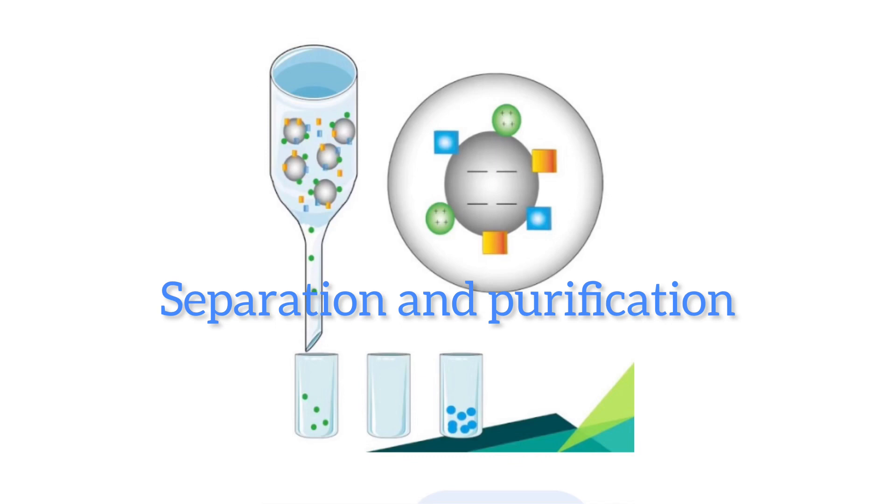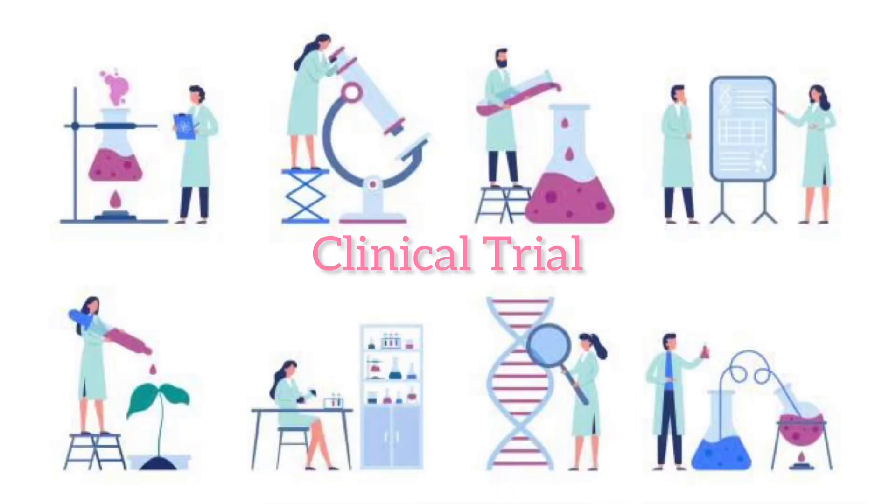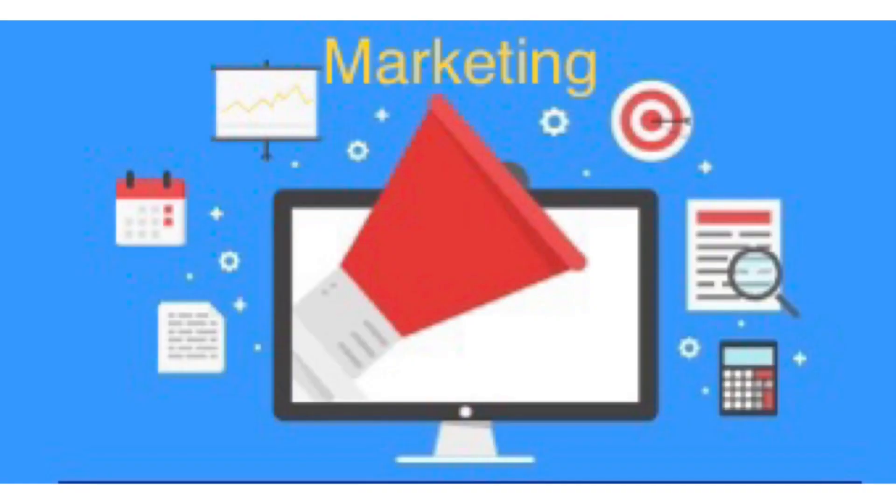After the formation of the product, it undergoes some processes such as separation and purification before a finished product is ready for marketing. These processes are collectively called downstream processing.